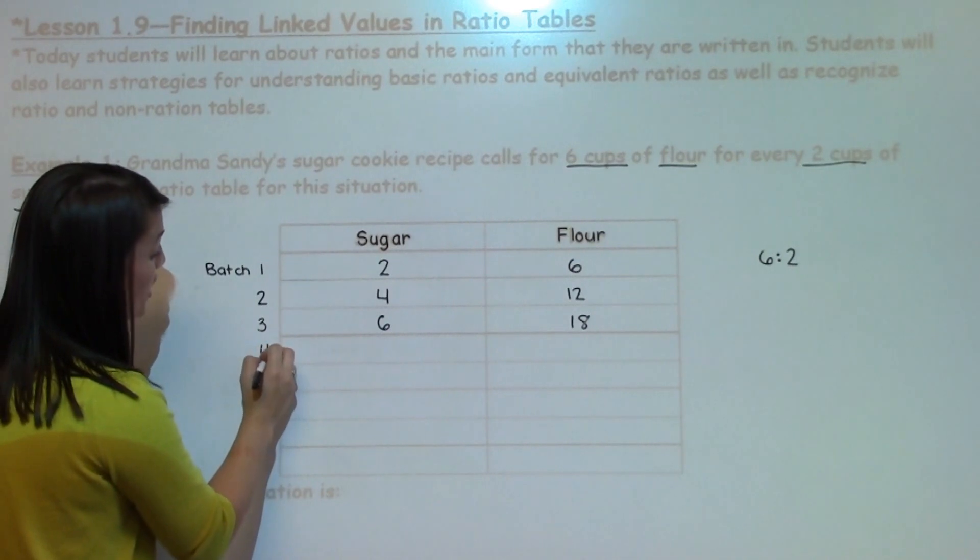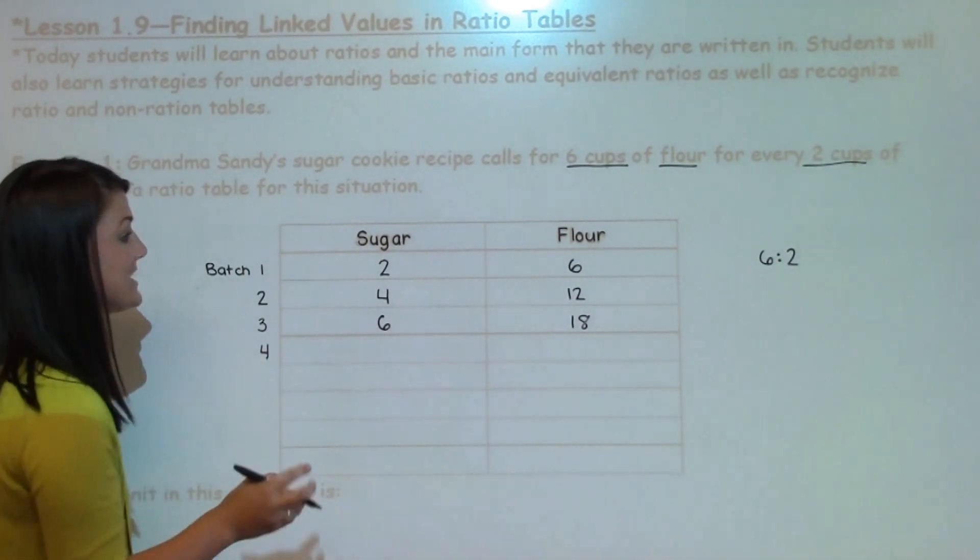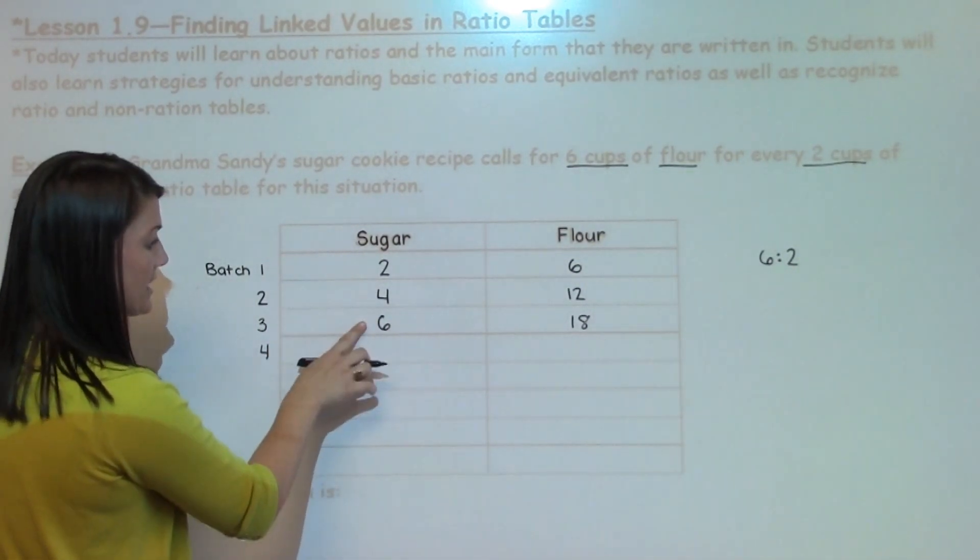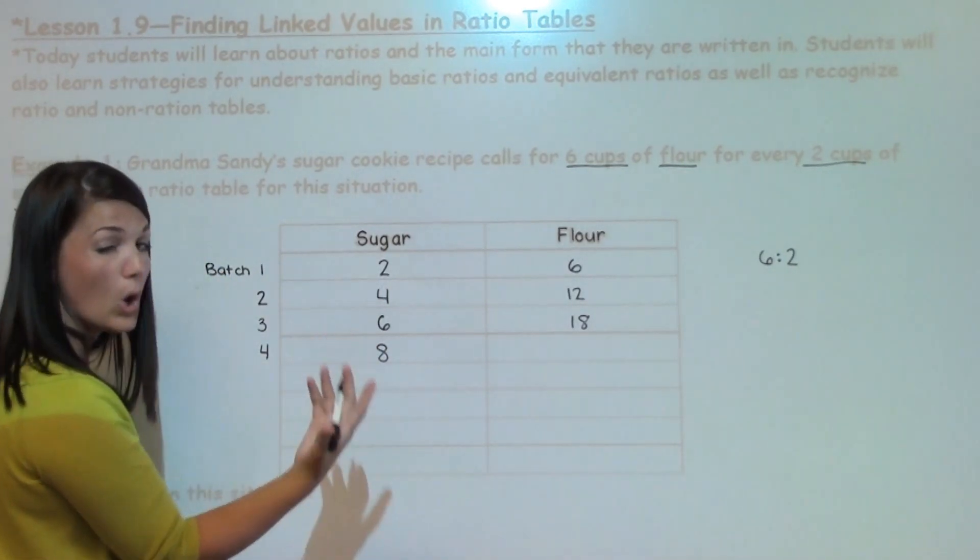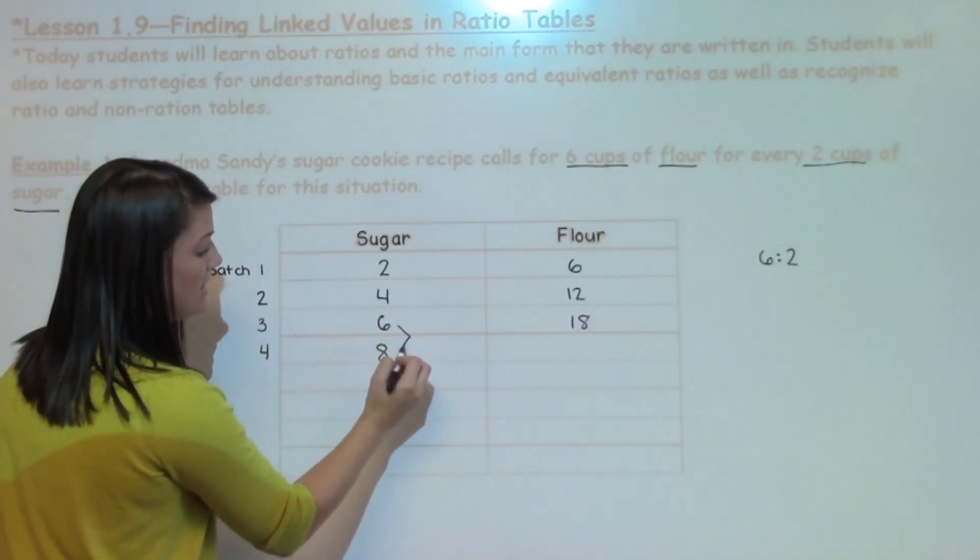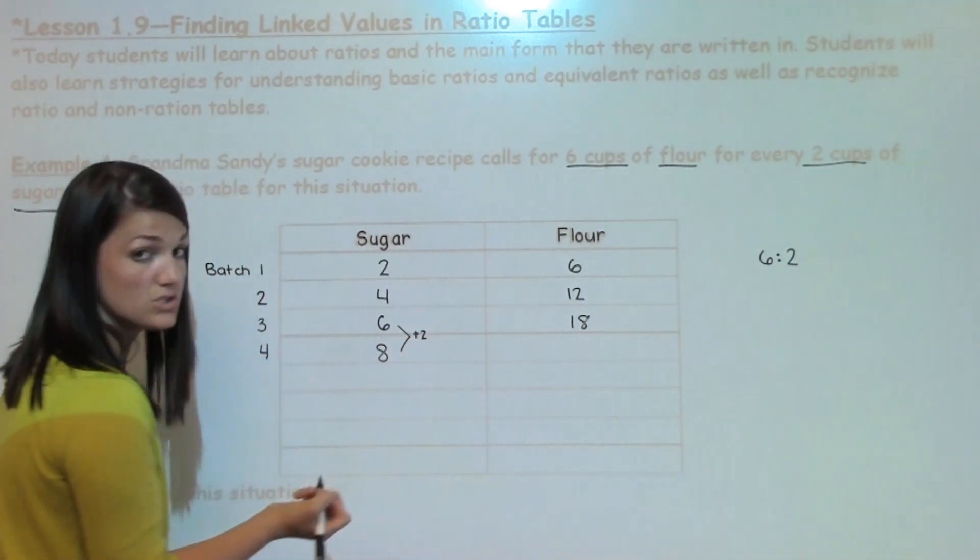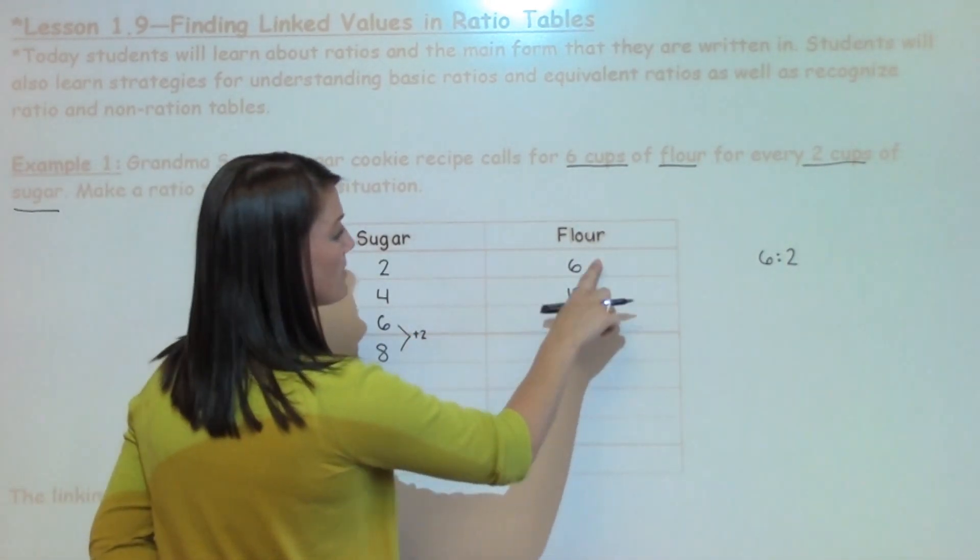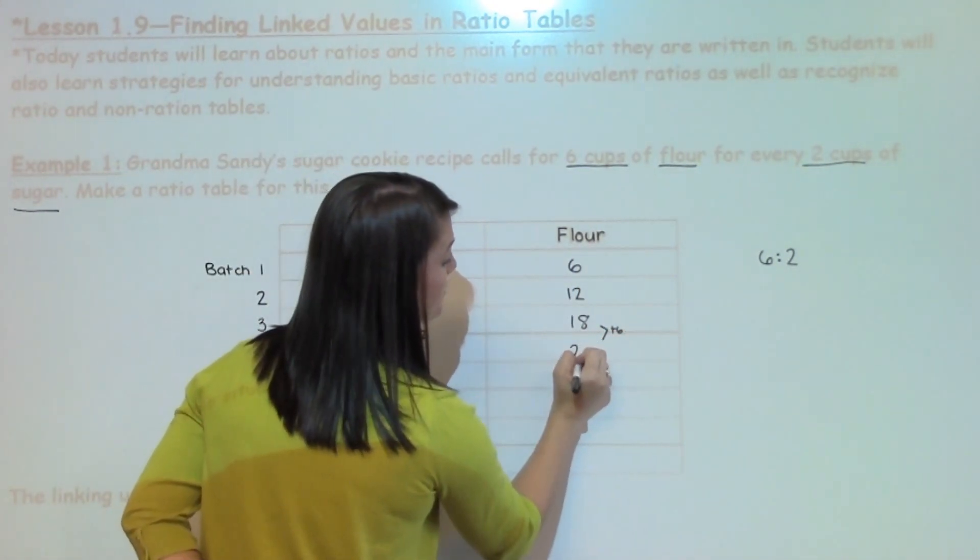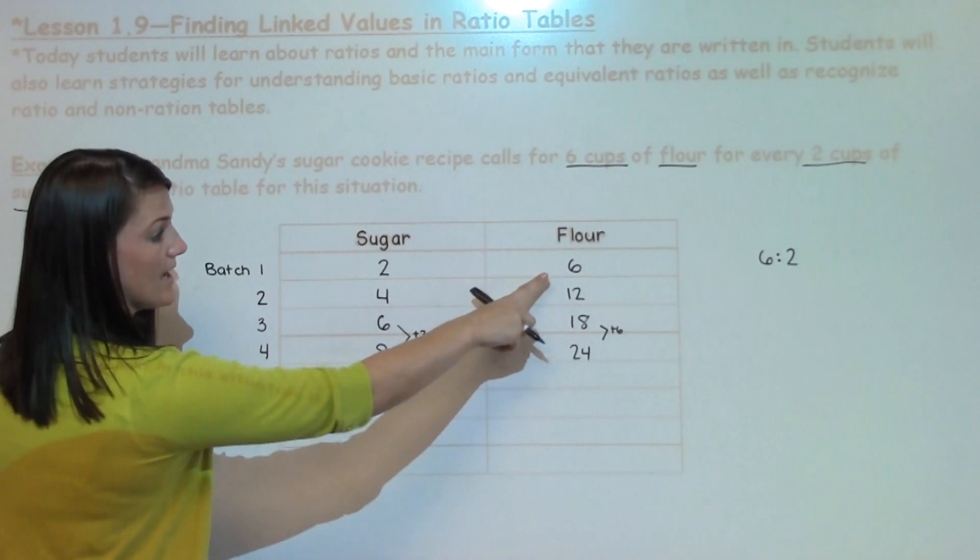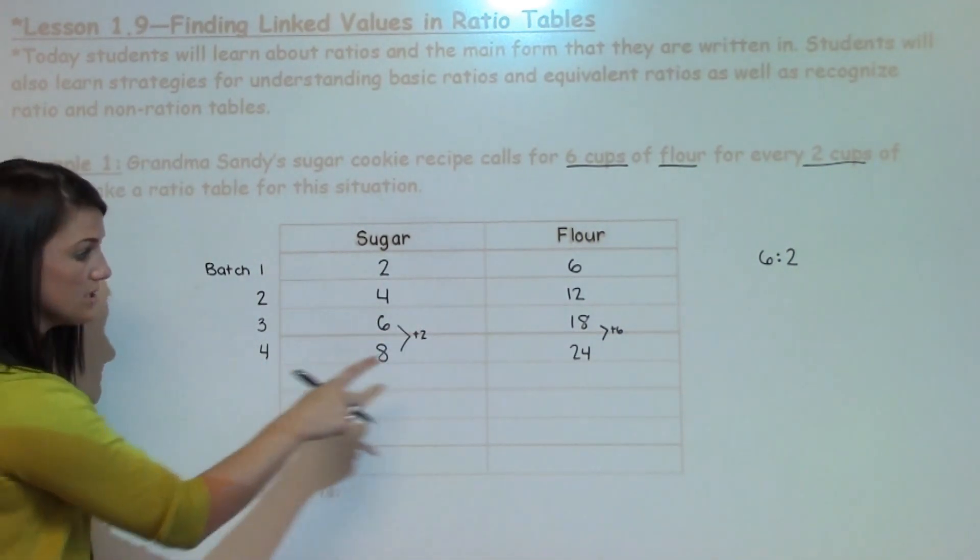If I wanted to make 4 batches of her sugar cookies, I would continue to increase. Here I would be increasing by 2. 2 times 4 is 8, or I could just look at the connection from 6 to 8, which is plus 2. Here I would be increasing by 6, so I would add 6 to get 24, which is also the same as 6 times 4 batches.